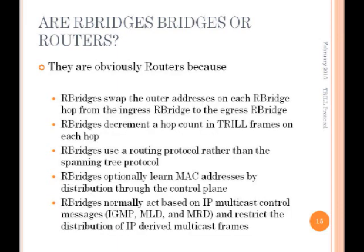And here are five reasons why they're clearly routers: at each hop they swap the outer address and decrement the hop count; they use IS-IS, the routing protocol; they don't use spanning tree; there's an optional feature where you can transmit end-station MAC addresses via the control plane rather than learning them from the data plane — useful for roaming Wi-Fi stations or vMotion; and they have a multicast optimization feature, which is really a Layer 3 feature.